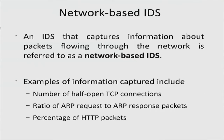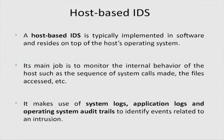A network-based IDS captures information about flagged packets flowing through the network. Examples of information captured include the number of half-open TCP connections, the ratio of ARP requests to ARP response packets, and the percentage of HTTP packets compared to the total number of network packets. Network variables are what is monitored here.